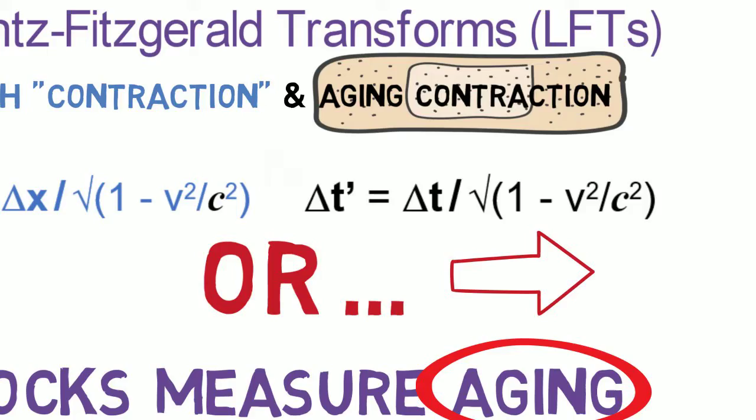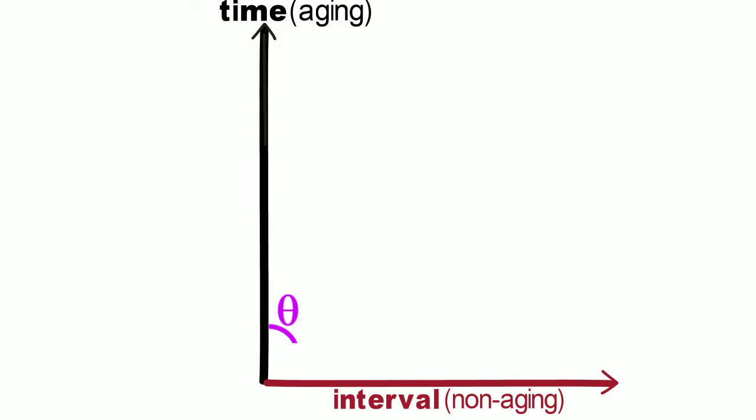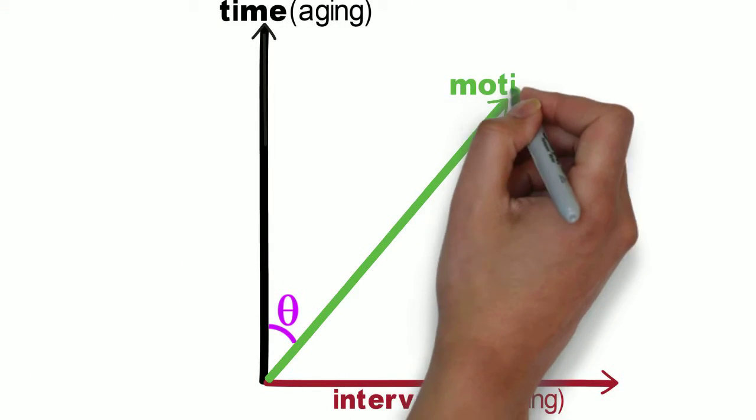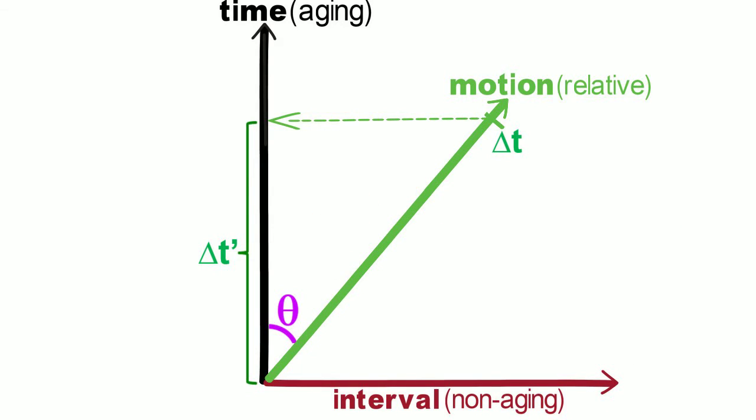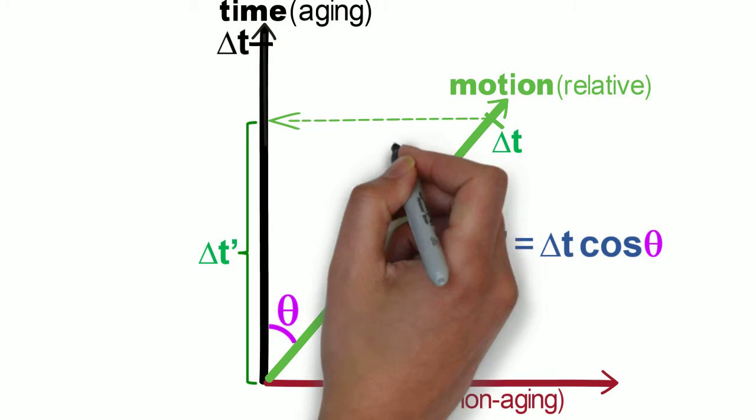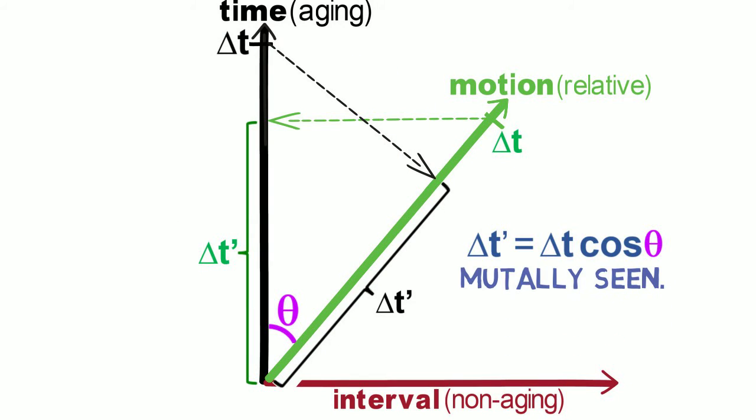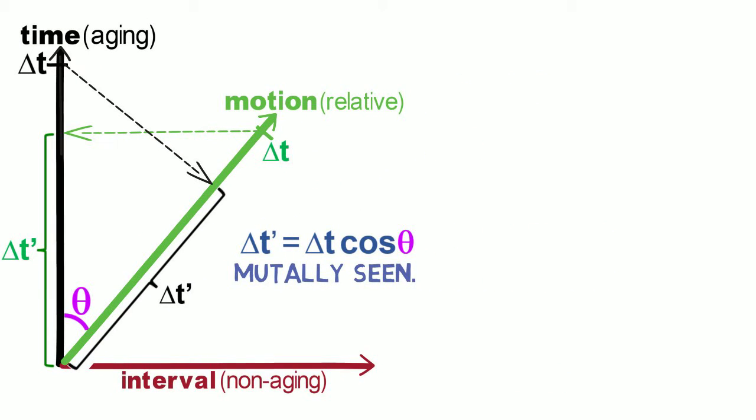Interval time demonstrates aging contraction quite gracefully. Being Euclidean, it's simply a worldline's component on the aging coordinate given by the cosine of their worldline angle. This also has the mutuality characteristic of relativity.